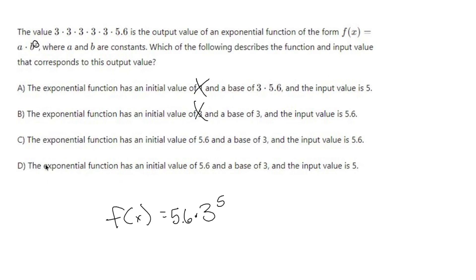So the answer in this problem is going to be d. It wouldn't make sense to have 5.6 again in this problem. Even if you're unsure what input value means here, we can still realize we wouldn't use 5.6 twice if it's not seen twice. So we're going with d — that's our answer.